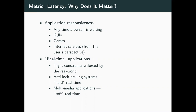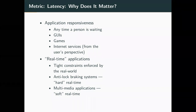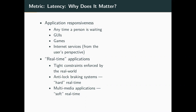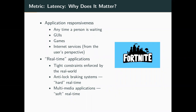An example would be anti-lock braking systems — we would describe this as hard real-time. If your ABS takes another 200 milliseconds to decide to spin one of your tires, you might crash, so that's probably not good. However, multimedia applications — if you have to buffer or lose a couple of frames on your video, it's probably not the end of the world. But it's still a constraint given to us by the real world, by our eyes looking at this thing and being like, oh, it froze for a second. So we do have to consider it.